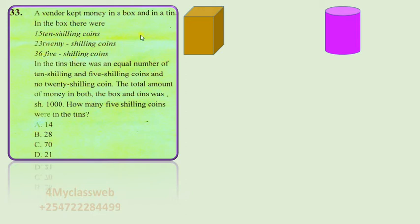Therefore, to get the total amount of money that was in the box, we need to take the 15 pieces of ten-shilling coins, then we multiply by 10 to get shillings 150. We do the same for the 23 pieces of twenty-shilling coins, and then we multiply by 20 to get 460.